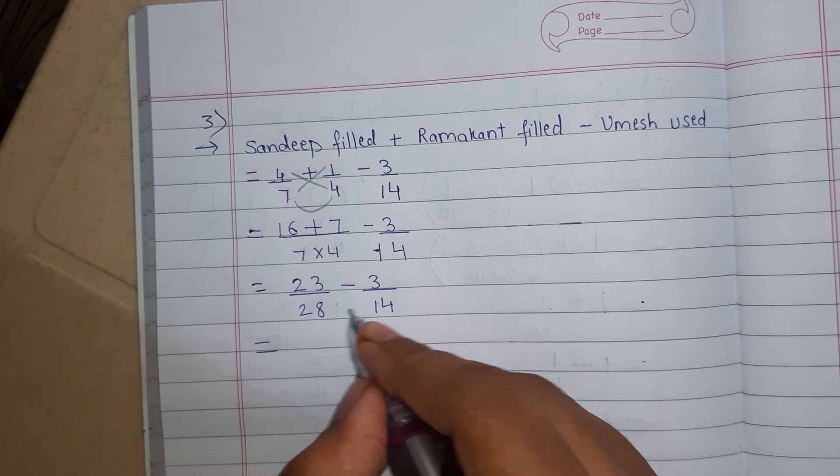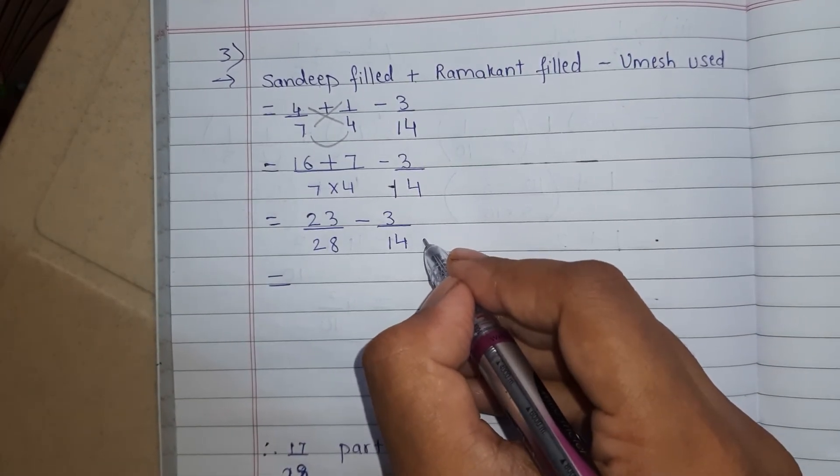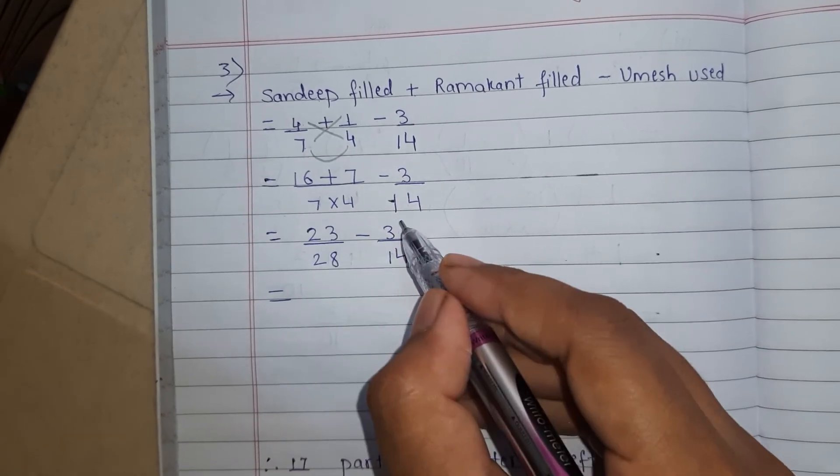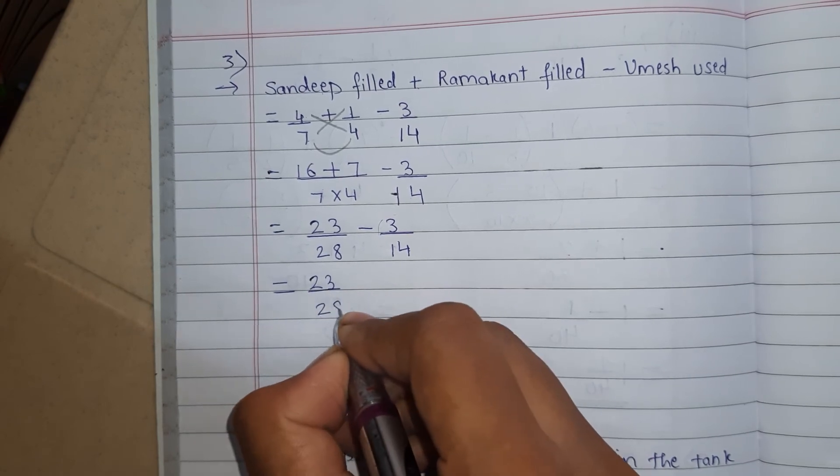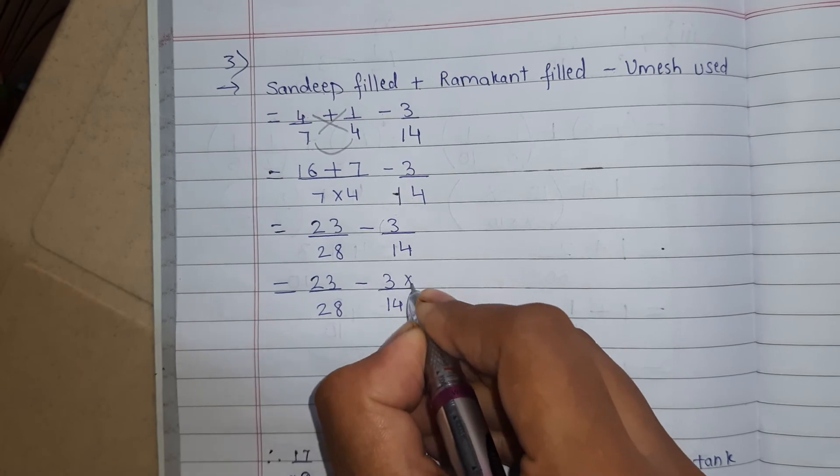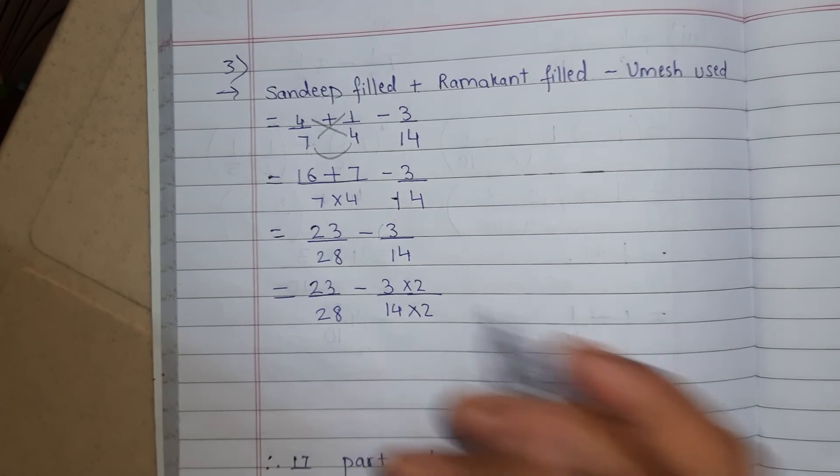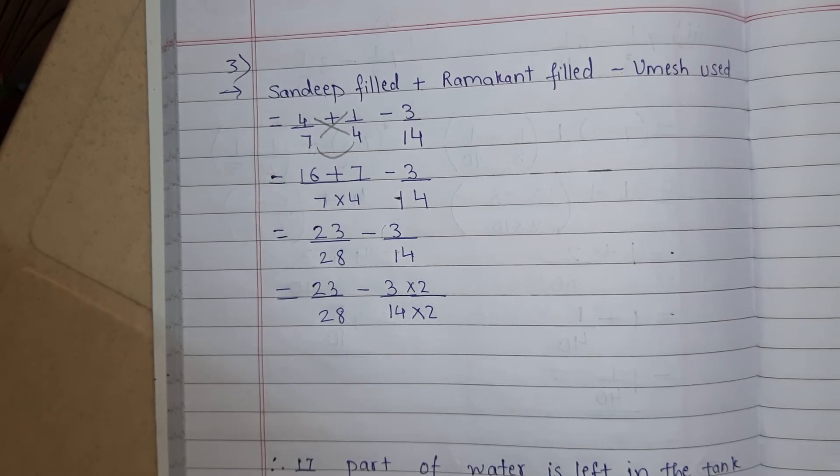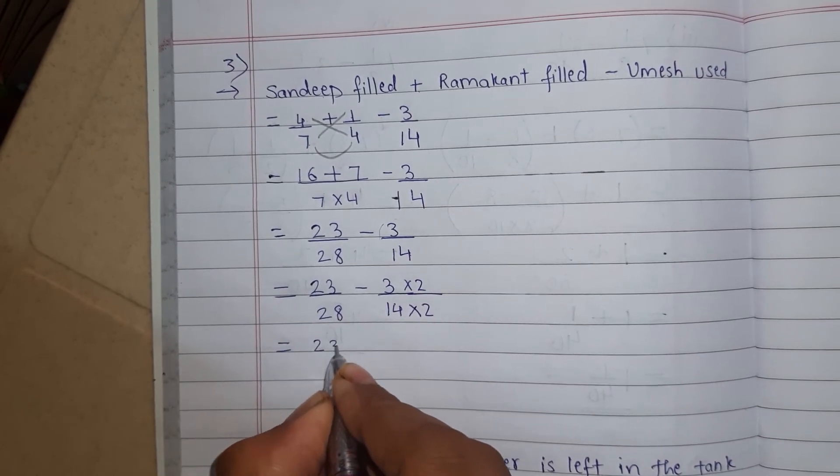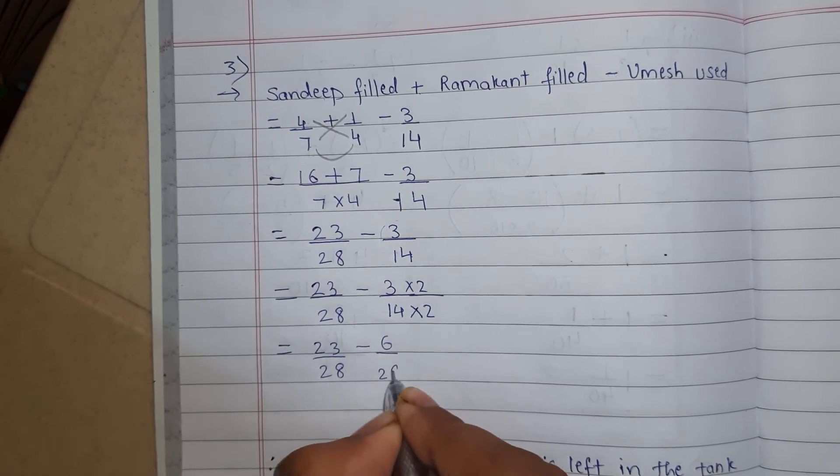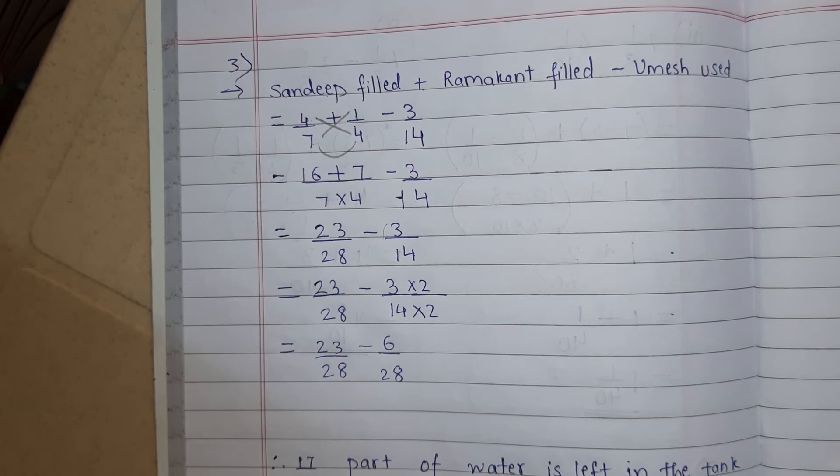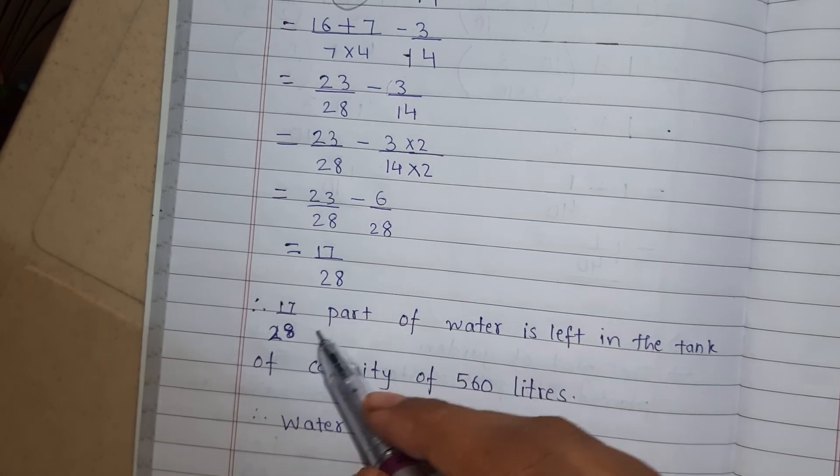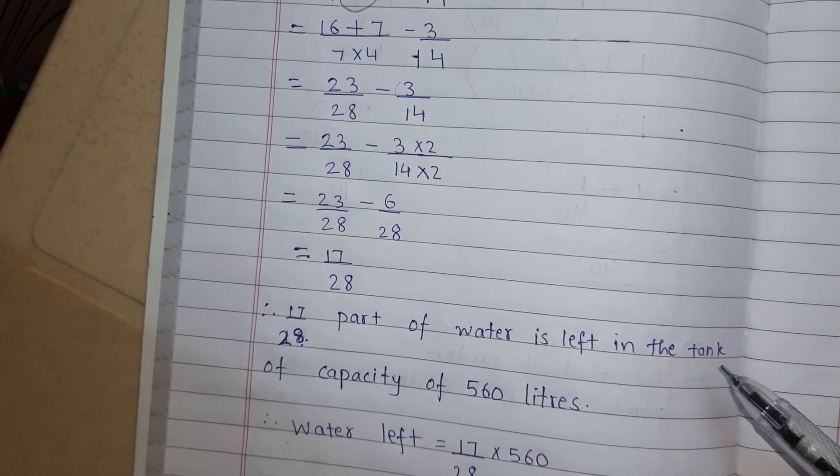Now your denominators are different. So we know that 14 into 2 is 28. So 14 ko 2 se multiply karne ke baad 28 milta hai. Minus ye fraction ko hume change nahi karna hai. Sirf is fraction ko hum change karenge. 23/28 minus 3/14 into 2 into 2. Both numerator and denominator we will multiply with 2. Now 3 into 2 how much? It is 6. 3 2s are 6. And 14 2s are 28. So 23/28 minus 6/28. Understood? Now 23 minus 6 is 17.